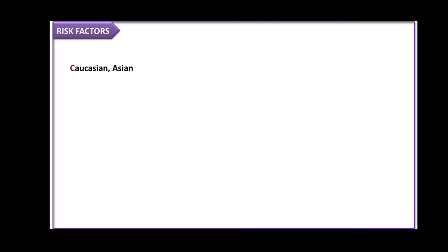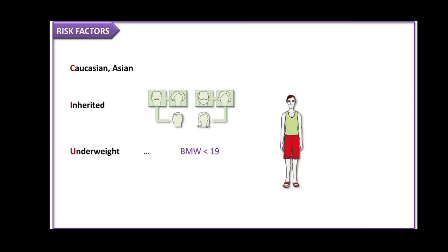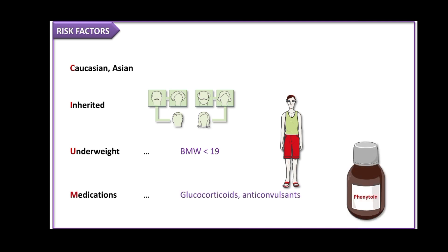L stands for lifestyle, including smoking, drinking alcohol, or a sedentary lifestyle. C stands for Caucasian and Asian ethnicities, particularly in women. I stands for inherited — the risk for osteoporosis can be inherited. U stands for being underweight, having a BMI of less than 19. M stands for medications like glucocorticoids or anticonvulsants — glucocorticoids used for longer than three months enhance osteoclastic activity, as do anticonvulsants.